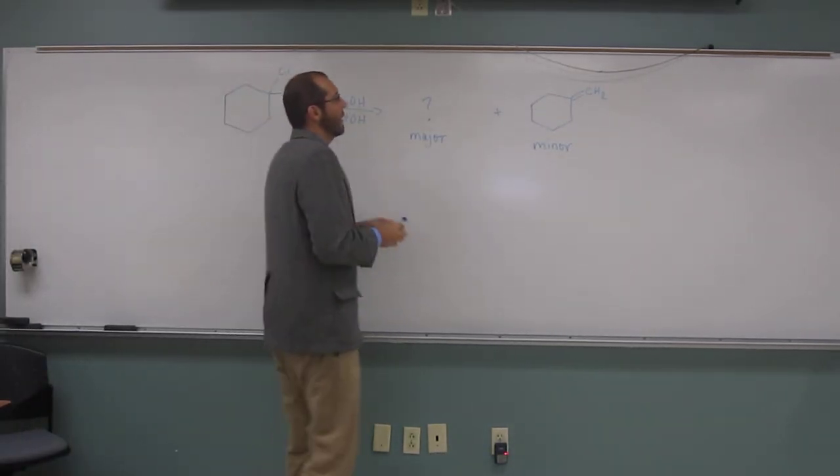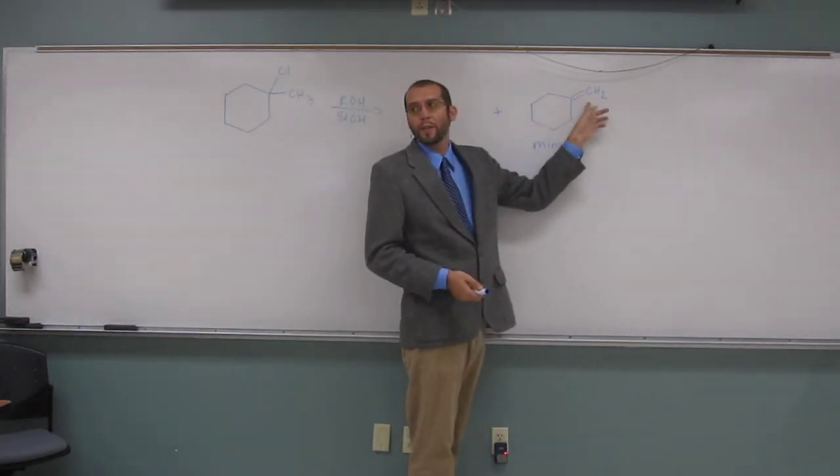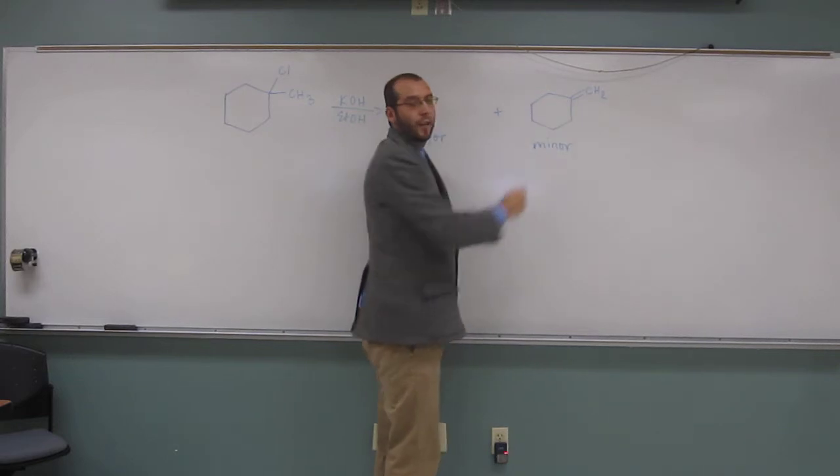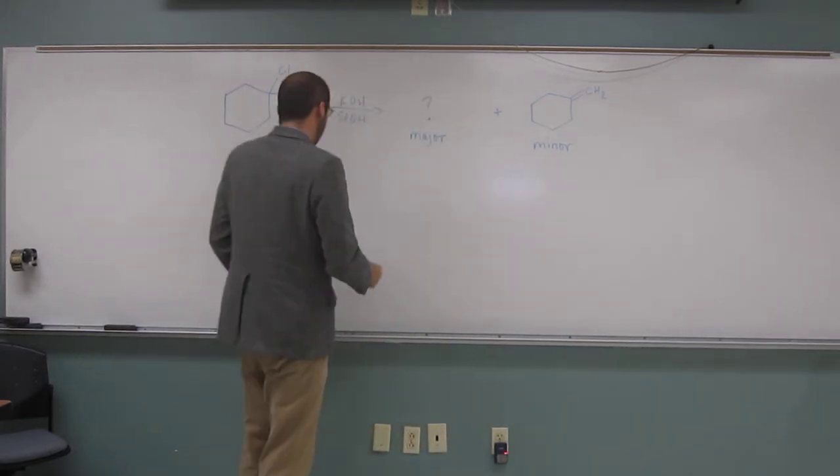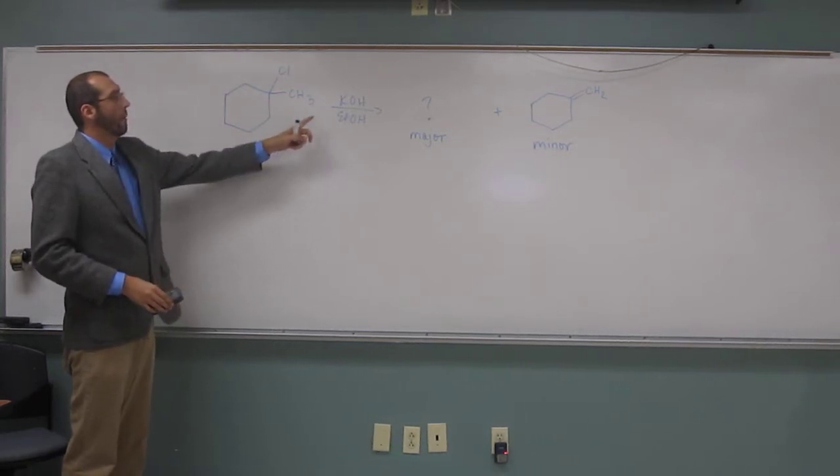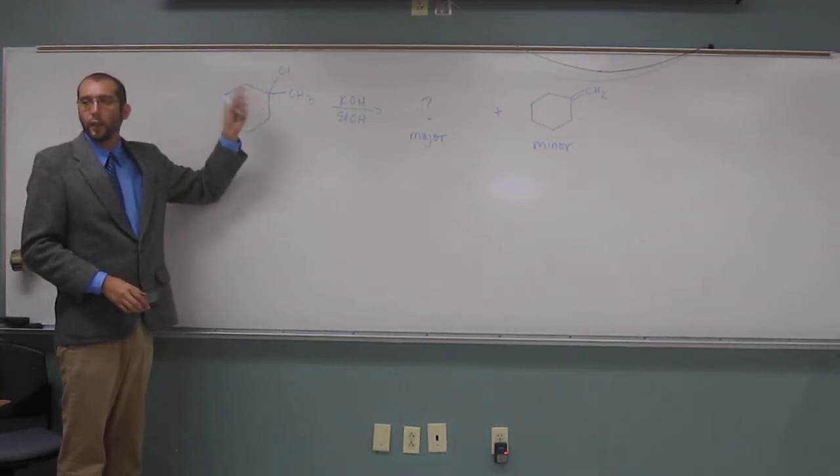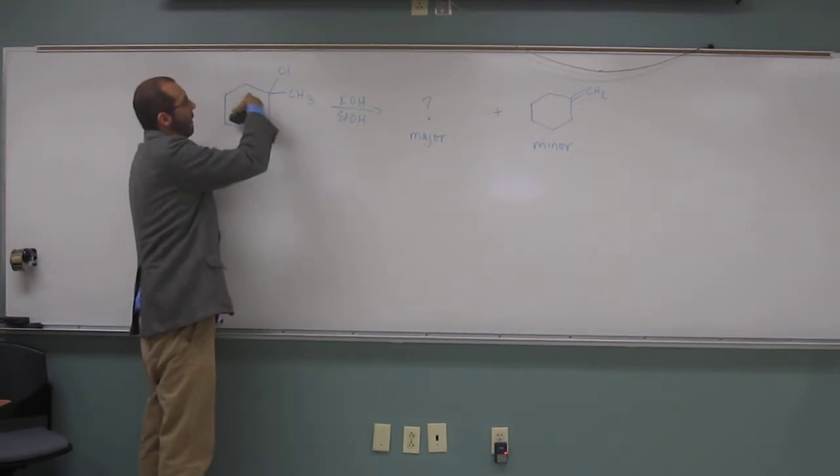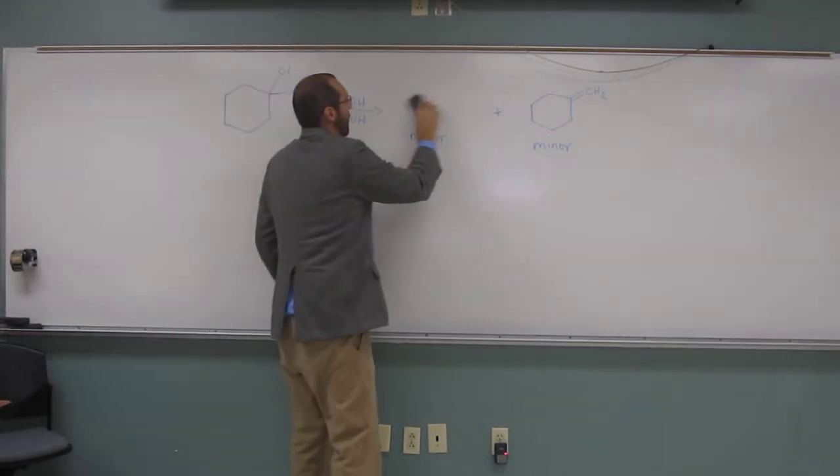The major product, of course this is the exocyclic double bond, that's going to be the minor product because it's only di-substituted. You can get a more substituted product from this, so remember an E2 reaction takes an alkyl halide, gives you an alkene out of it, so if you put the double bond there or there, it would be the same product.